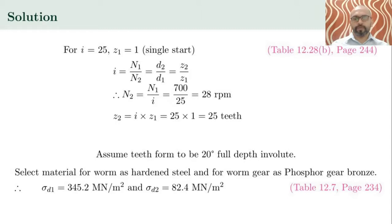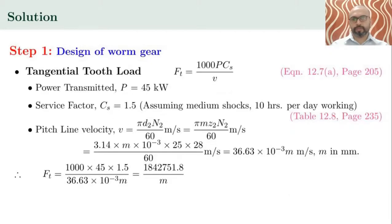We assume the tooth form to be a 20-degree full-depth involute system. The material for the WAM is selected as hardened steel and for the WAM gear as phosphor gear bronze. Therefore, sigma D1 is 345.2 MN/m² and sigma D2 is 82.4 MN/m², obtained from table 12.7 on page 284. Since sigma D2 for the WAM gear material is very small, the WAM gear will obviously be the weaker element, so we design for the WAM gear.